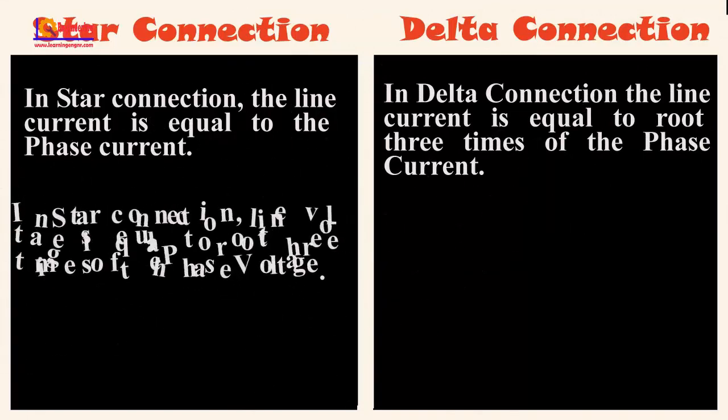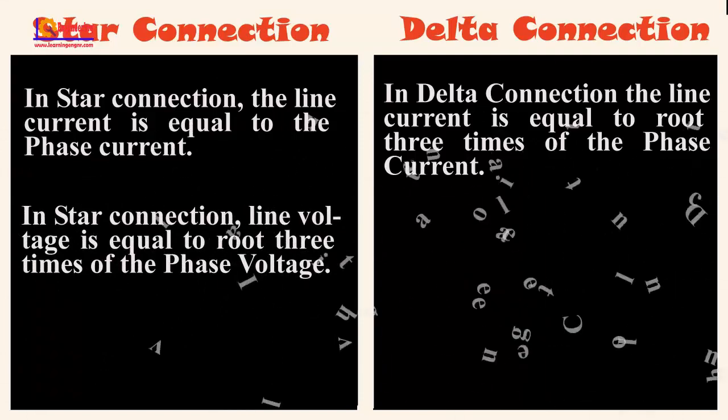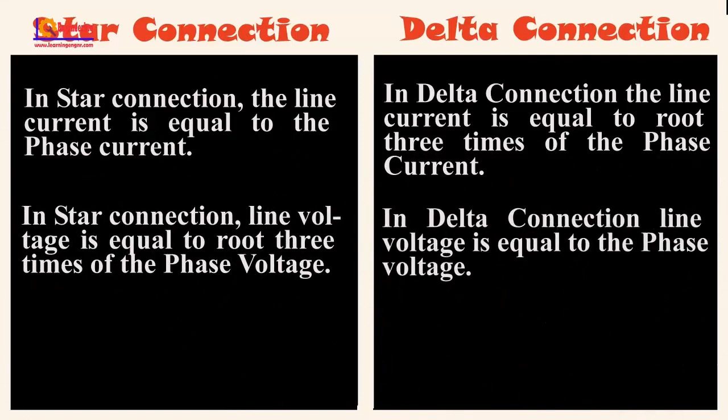In star connection, line voltage is equal to root 3 times the phase voltage. In delta connection, line voltage is equal to the phase voltage.